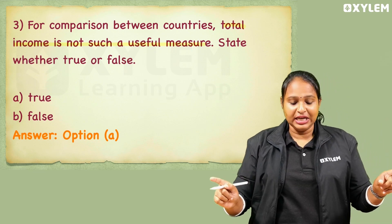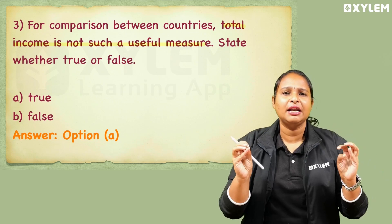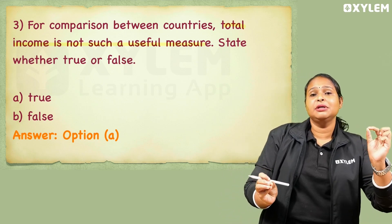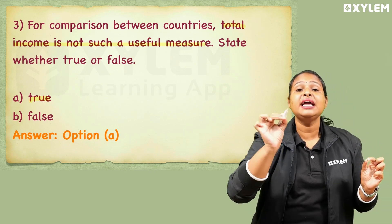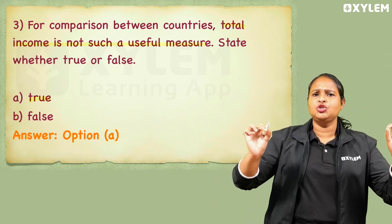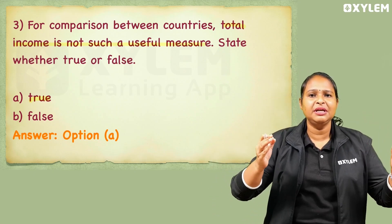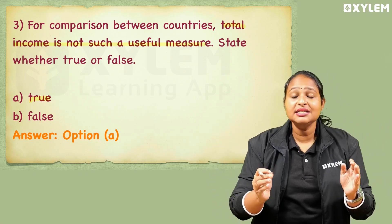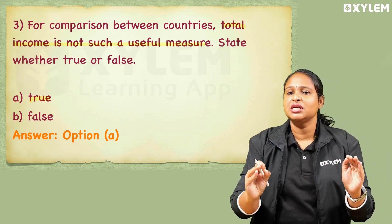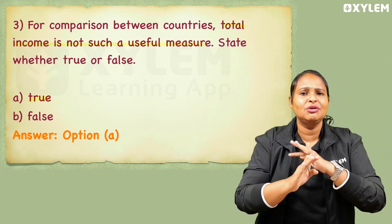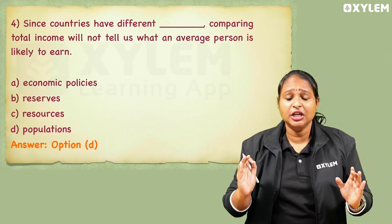True or false. What does total income mean? This is the difference when a country is not a useful measure. So if there is any wide answer, there is a true answer. Whether it is wrong, comparing between countries — total income is not such a useful measure. That's true — not a useful measure. Let's look at the question.